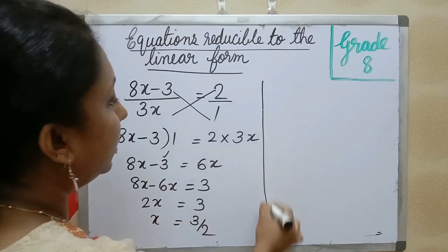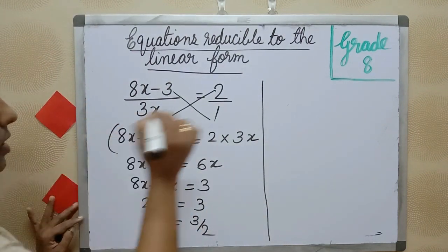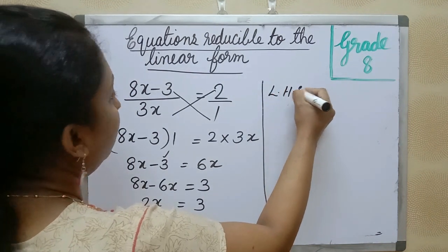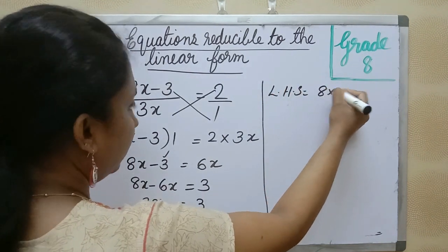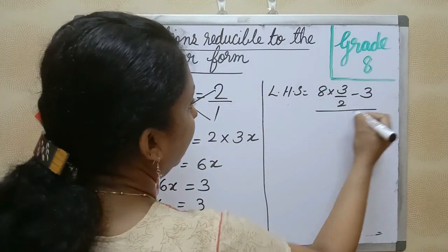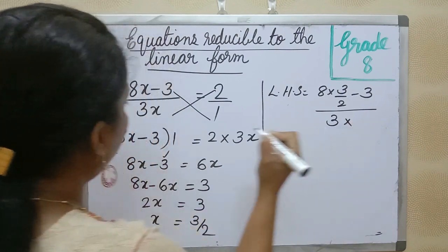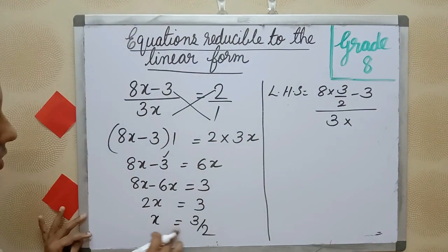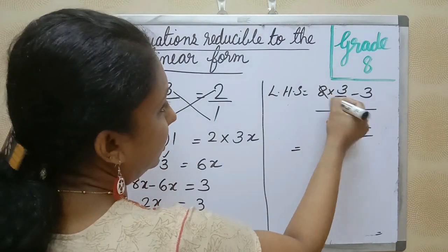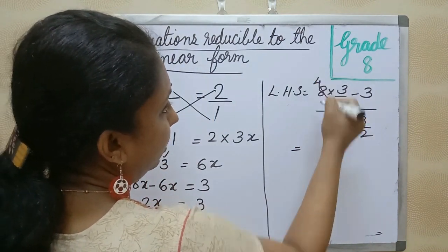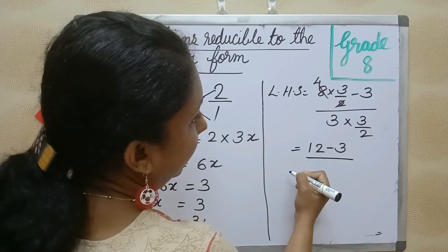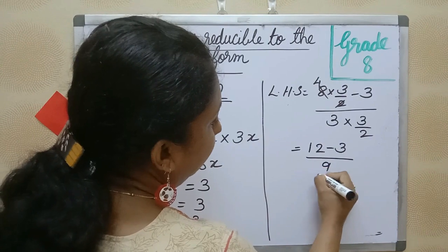Now check whether LHS is equal to RHS. Put the value of x in LHS. LHS is equal to 8 into 3 by 2 minus 3, divided by 3 into 3 by 2. That is 12 minus 3 divided by 9 by 2.